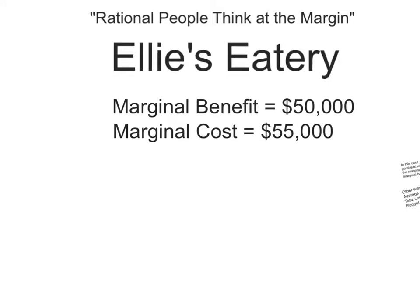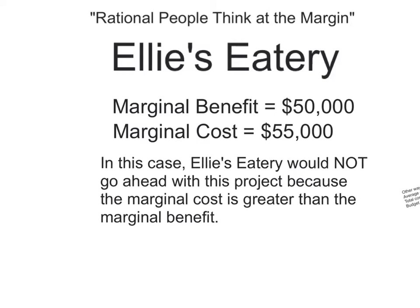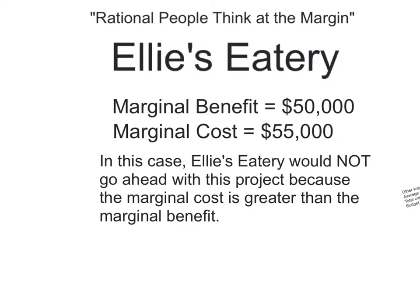In this example, her marginal cost is greater than her marginal benefit. So in this case, Ellie's Eatery would not go ahead with the project because the marginal cost is greater than the marginal benefit.